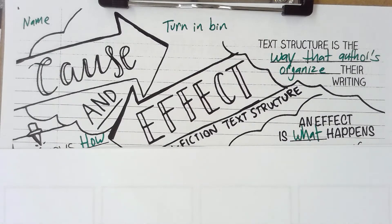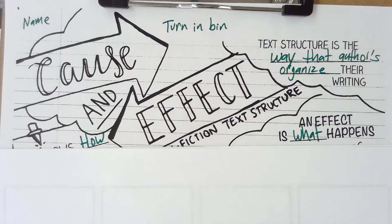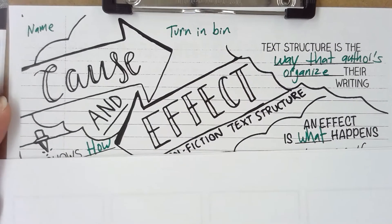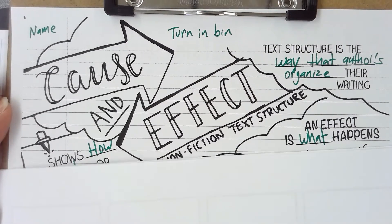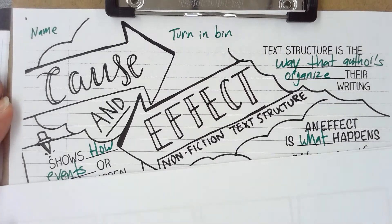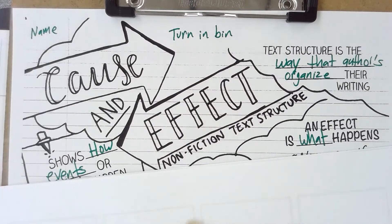Welcome to your cause and effect doodle notes lesson. Last week you took notes on the different types of text structures — there are five in total. The first one from last week was compare and contrast, the second one was descriptive, and the third one we're going to focus on today is cause and effect, your third nonfiction text structure.